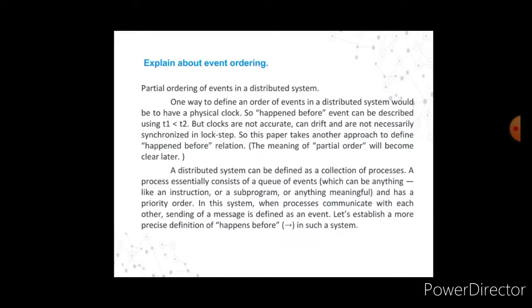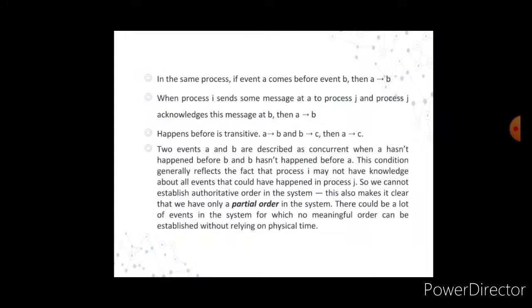In a distributed system, defined as a collection of processes, a process essentially consists of a queue of events. Let us establish a more precise definition of happened-before, denoted by an arrow mark, in such a system. In a process, if event A comes before event B, then A → B. When process I sends a message at event A to process and that process acknowledges the message at event B, then also A → B. Happened-before is transitive: if A → B and B → C, then A → C.